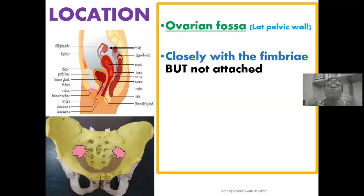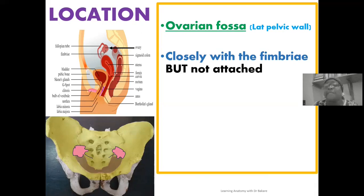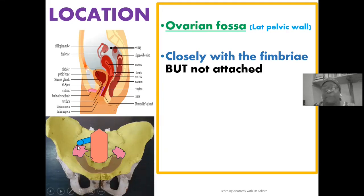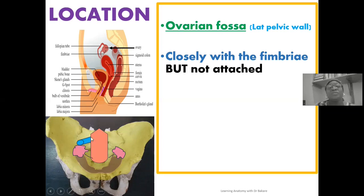The uterus has tubular extensions — the uterine tube — and at the terminal region of the uterine tube, we have finger-like expressions called fimbrae. These are closely related to the ovarian fossa and to the ovary embedded within it, though not structurally connected. The uterus presents these tubular extensions on both sides, highlighted in blue, referred to as the uterine or fallopian tube, with finger-like expressions at the terminal end closely related to the ovarian fossa and the ovary.